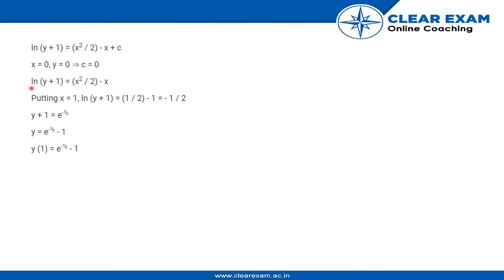This is the function that the question is asking us. When we put x = 1, we have ln(y + 1) = 1/2 - 1, which equals -1/2. Therefore y + 1 = e^(-1/2), and so y(1) = e^(-1/2) - 1.